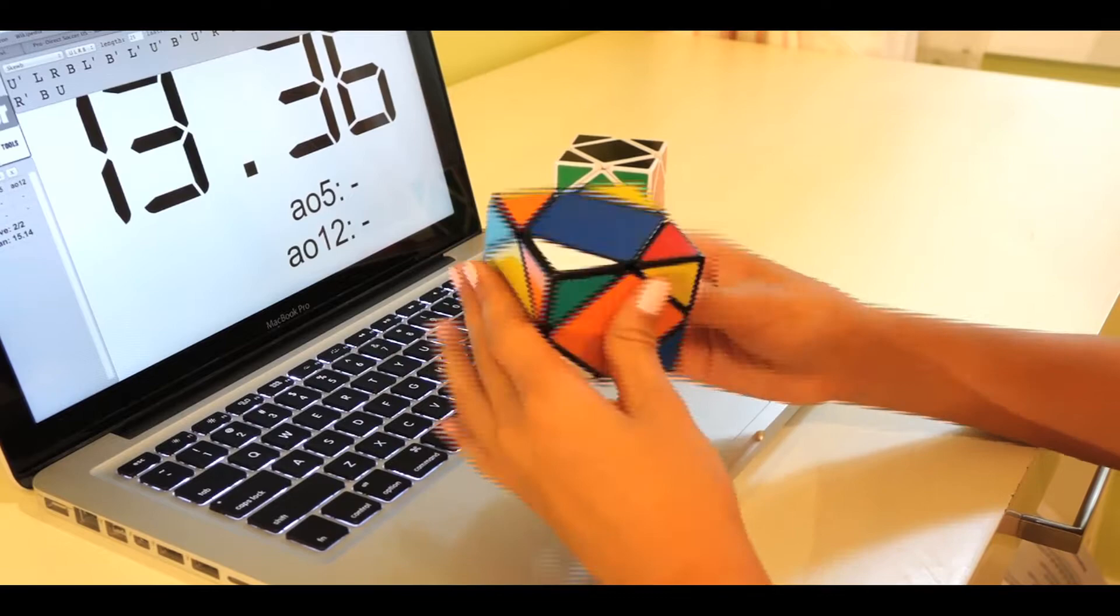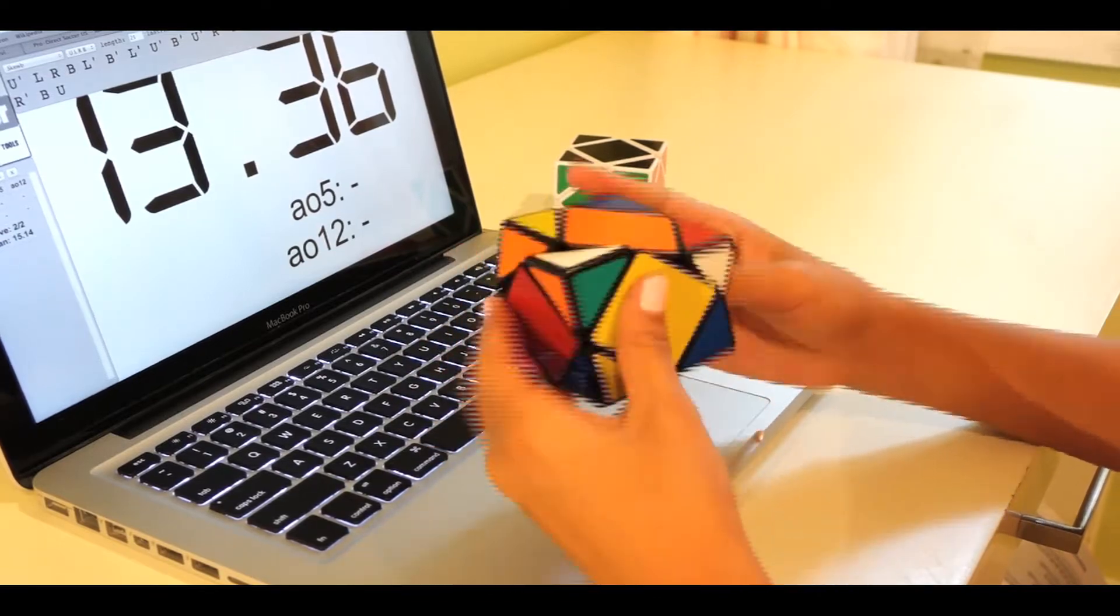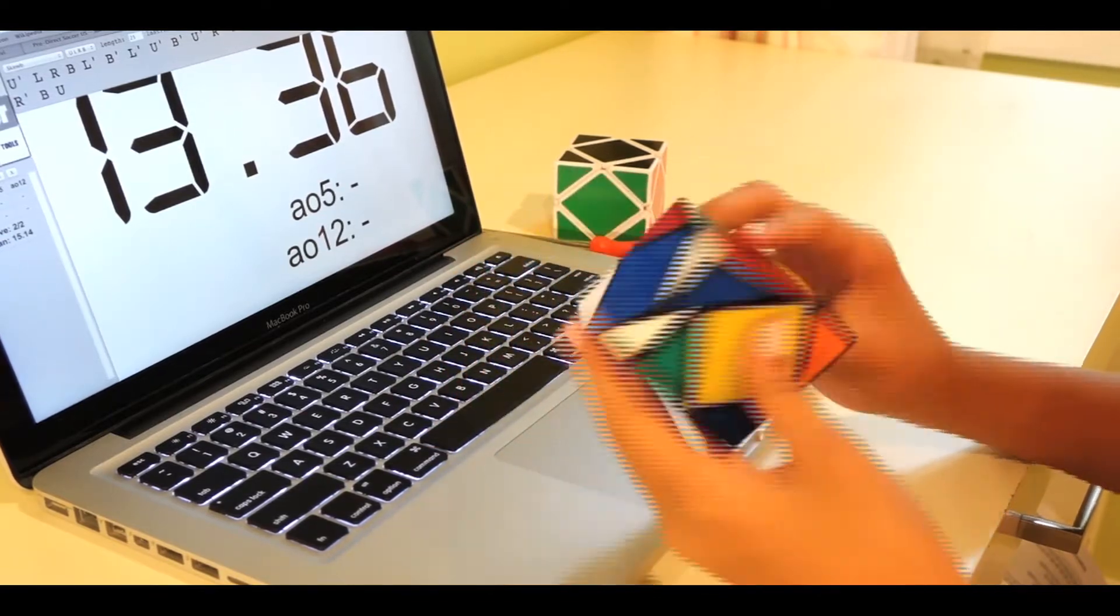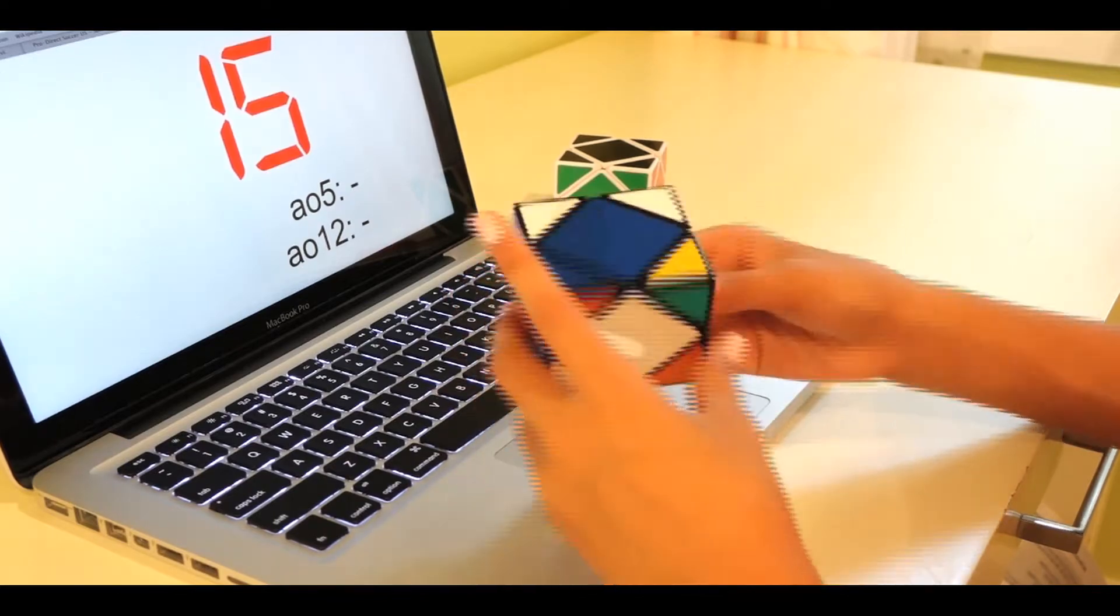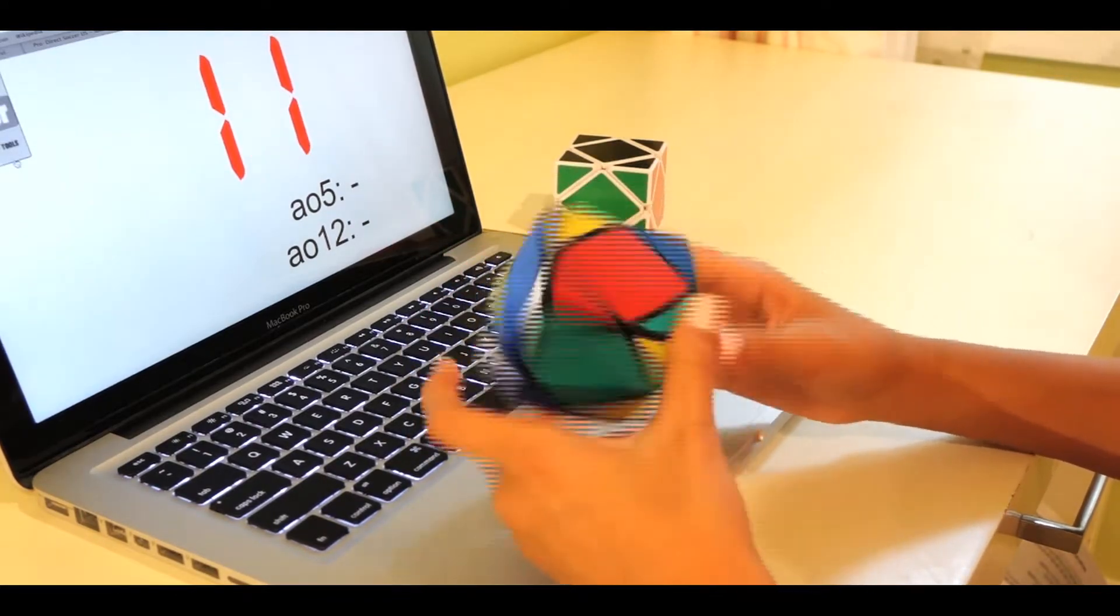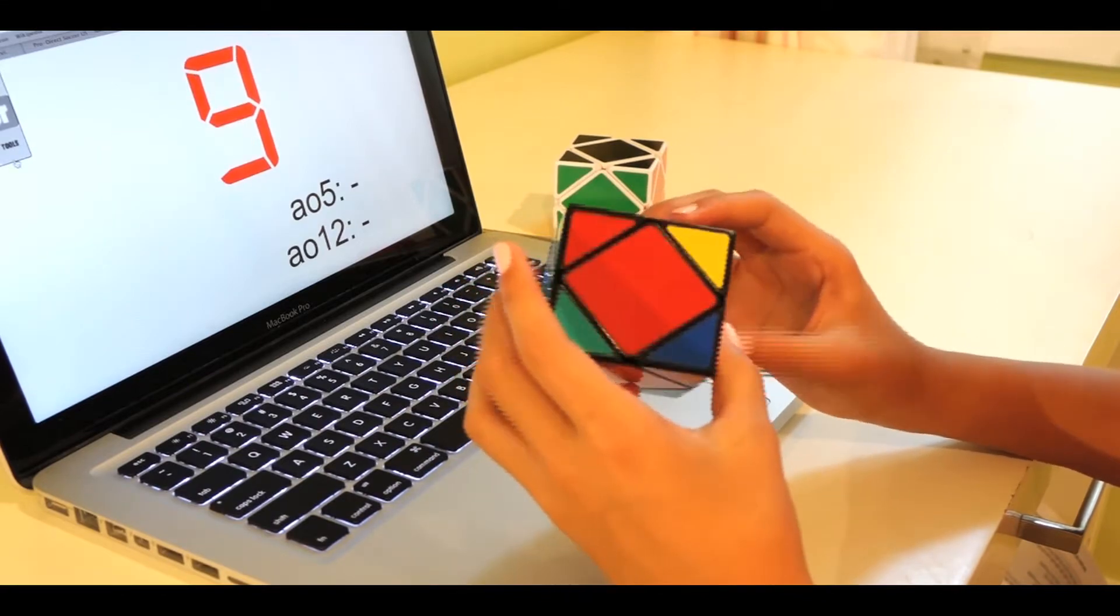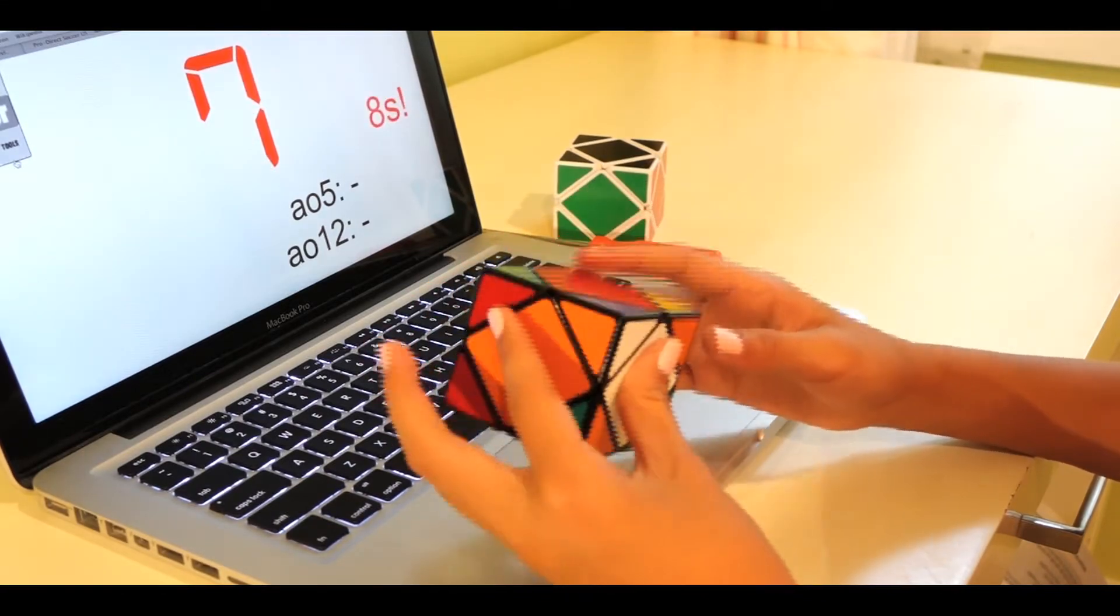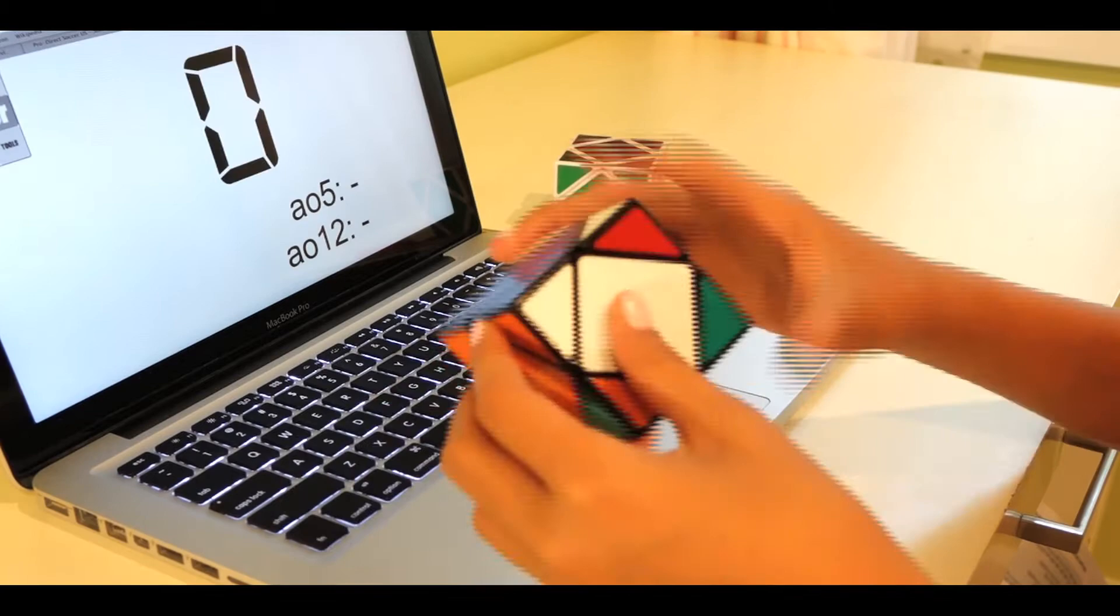Overall I definitely recommend this puzzle. It is way better than the Lanlan scube and also makes scube a more enjoyable WCA event for me. Really the only downfall is the reverse corner cutting, which really isn't a big issue. Other issues that people face with this puzzle can be easily fixed, for example the clickiness as I mentioned earlier.